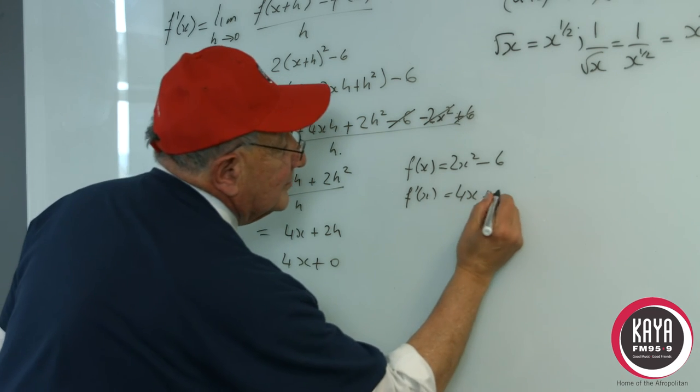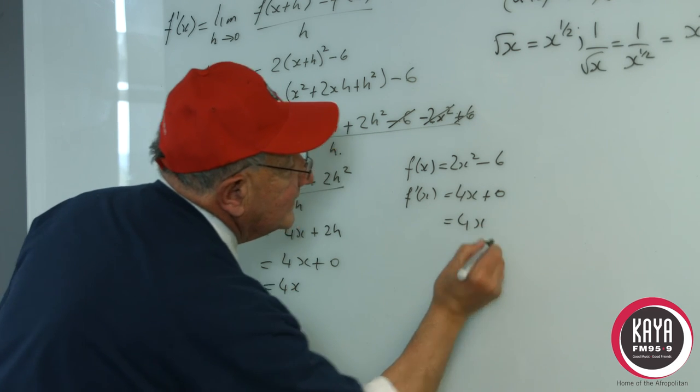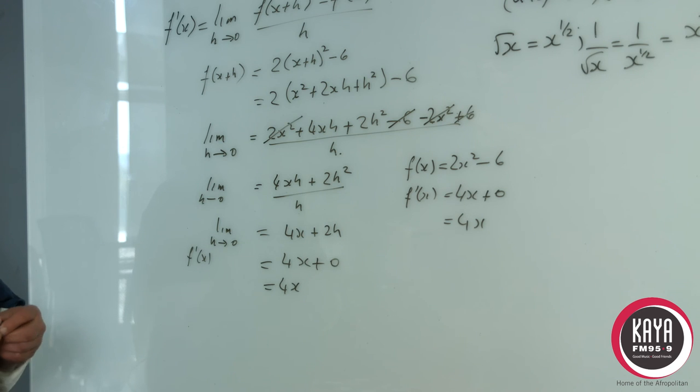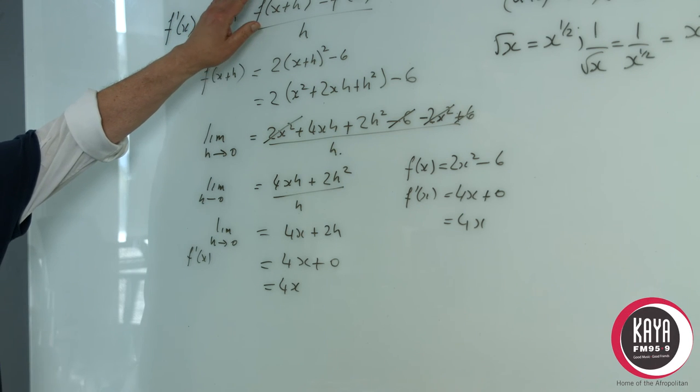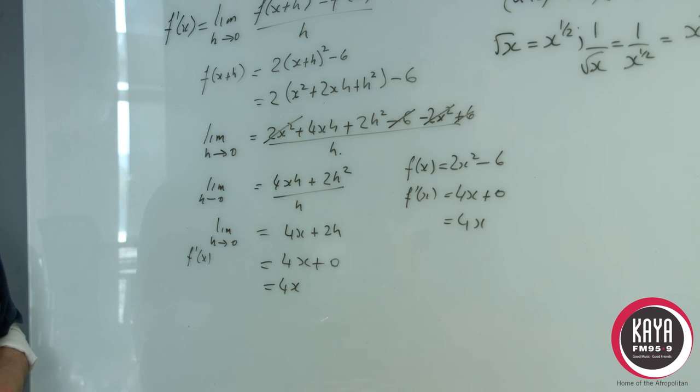And the differential of a constant is 0. We'll just put the 0. So this actually is 4x and that is 4x. And this is a proof from first principles of solving f(x) = 2x² - 6.